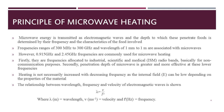Microwave energy is transmitted as electromagnetic waves and the depth to which these penetrate foods is determined by their frequency and food characteristics. Frequencies range from 300 MHz to 300 GHz with wavelengths of 1 mm to 1 meter. However, 0.915 GHz and 2.45 GHz are commonly used for microwave heating. These frequencies are chosen because they are allocated to industrial, scientific, and medical radio bands for non-communication purposes, and penetration depth is greater at these lower frequencies. 2.45 GHz is widely used in domestic microwaves.